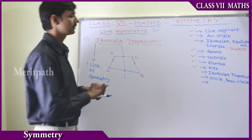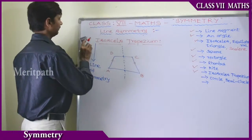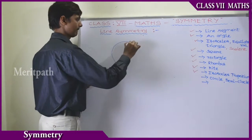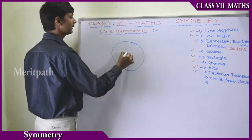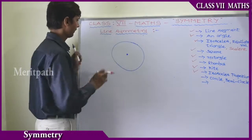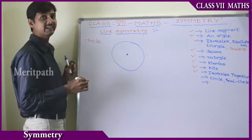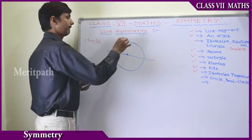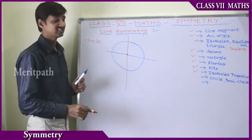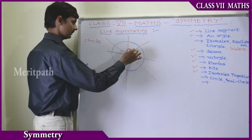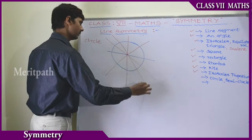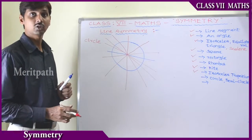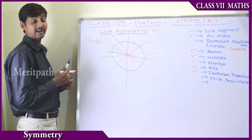Then we go to the next figure - circle and semicircle. We draw a line along with the center of the circle - it is called a diameter. We draw another line through the center of the circle, and similarly we can draw infinite lines through the center. So there are infinite lines of symmetry for a circle.